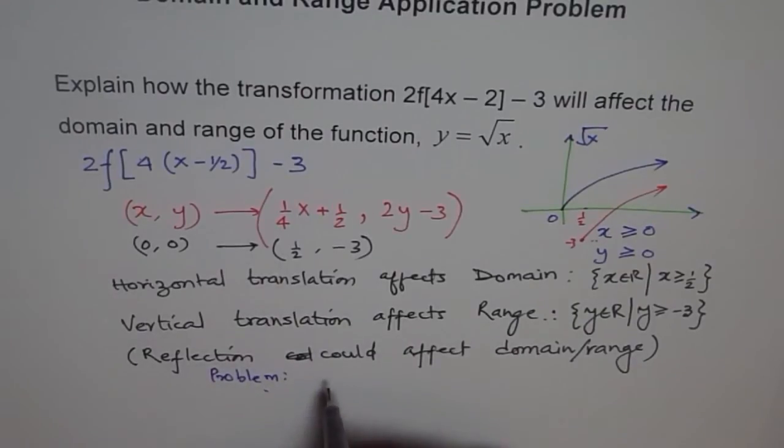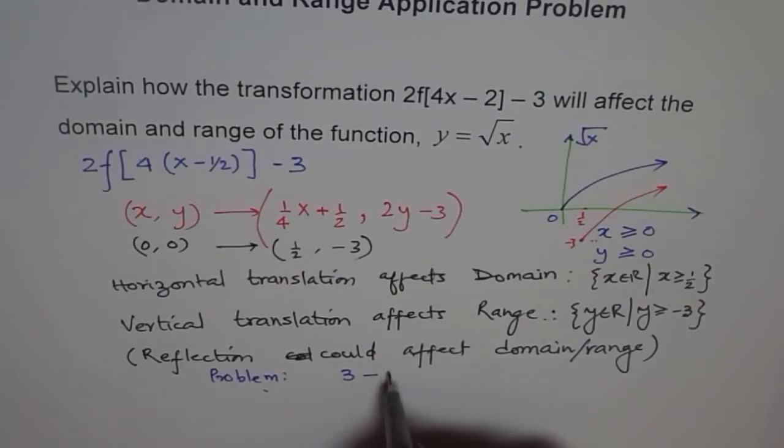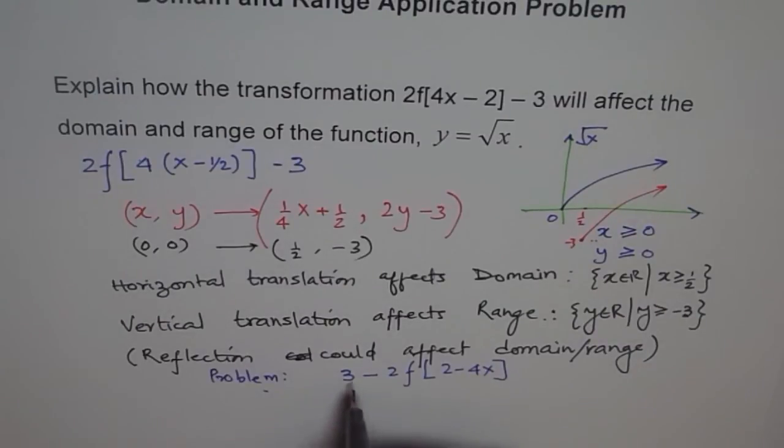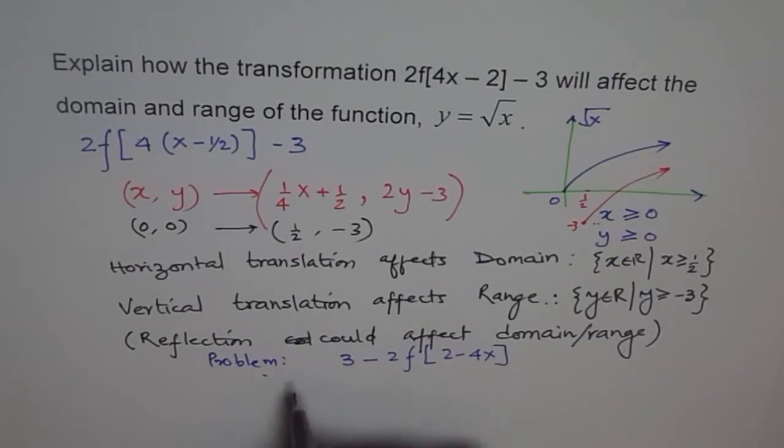So the question remains the same, but instead I am writing it like this. I am writing it as 3 minus 2f of 2 minus 4x. Now think this is your function. And let's say that is your transform function. Let's say y equals to this. Now you have to write how will the domain and range get affected. So this is your test problem to do. I hope you understand it. So here we are involving reflections, so there will be a much different answer than what I have already given. Okay, all the best. Thank you.